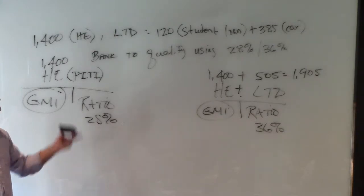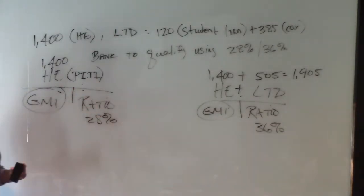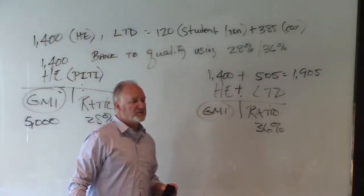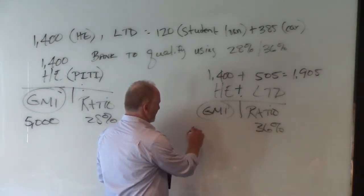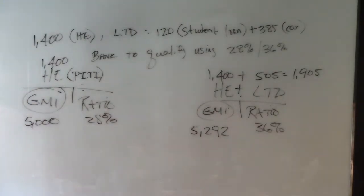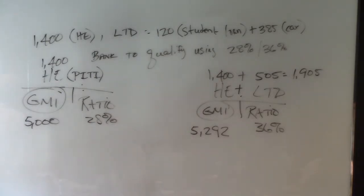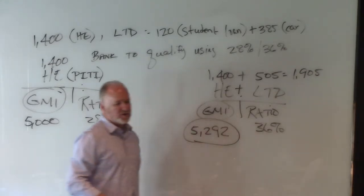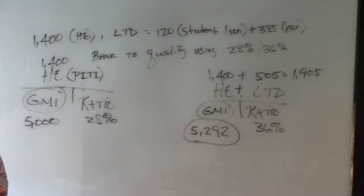You are finished with this question — all you have to do now is play with your calculator. What's $1,400 divided by 28%? $5,000. What is $1,905 divided by 36%? $5,292. Now here comes the question: what is the minimum monthly income that Joe must have to qualify? If it's the minimum income question, it's always going to be the higher of the two. So the answer is $5,292.